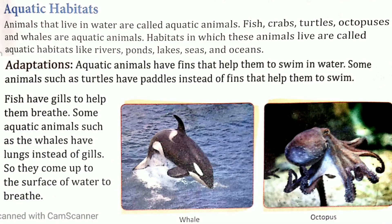Hello dear students, today we are going to discuss the next topic of your fourth chapter, that is animal habitats. In the last class we discussed terrestrial habitats, in which we read about desert adaptation and polar regions adaptation. Today we are going to discuss aquatic habitats. Aquatic habitats means jaleey vasisthan — the place where water animals live.